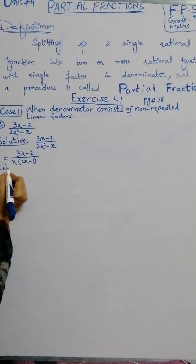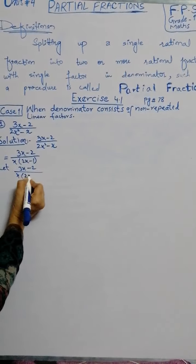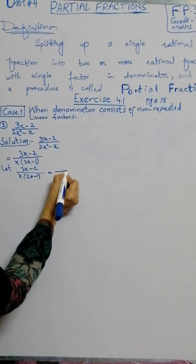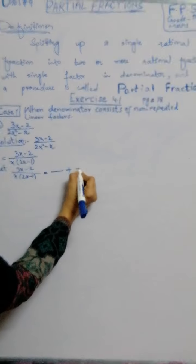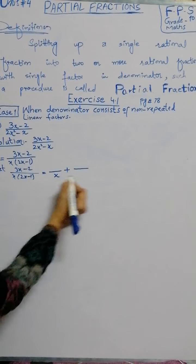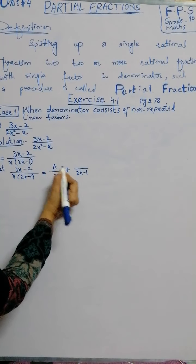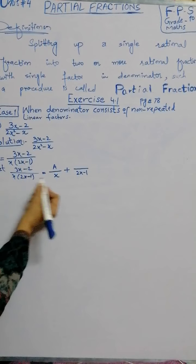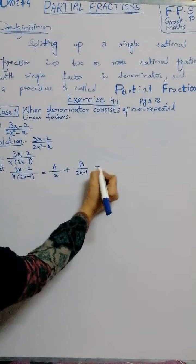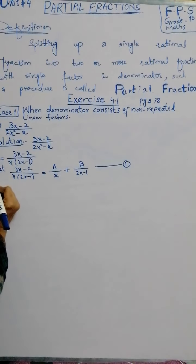So x times 2x minus 1 is equal to... Here we have two factors, so we have two partial fractions possible. The first denominator is x and the second is 2x minus 1. The partial fraction format has these denominators. For the numerators, we use letters A and B.